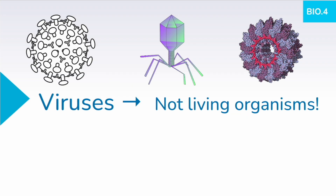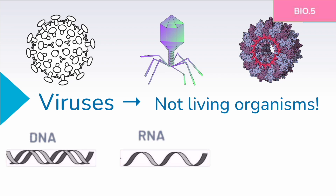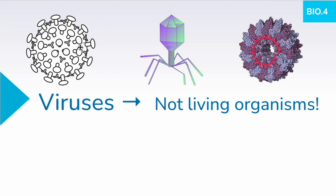Remember, viruses are not living organisms. They are small infectious particles usually surrounded by a protein coat. They have nucleic acid — either RNA or DNA inside them — but they can be very different. You might recognize this one as the shape of the coronavirus. This is a T4 phage, a type of virus that infects bacteria, not people. And this is the tobacco mosaic virus that infects plants, not people either.